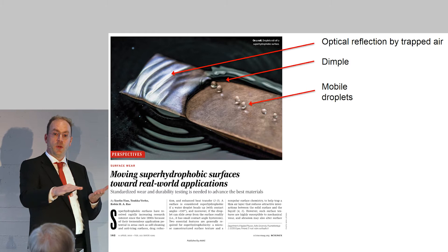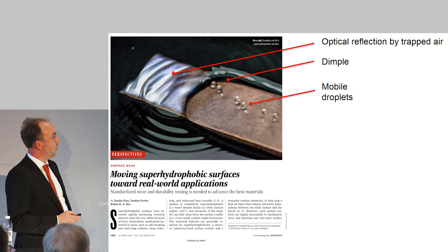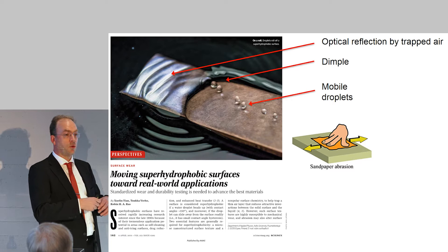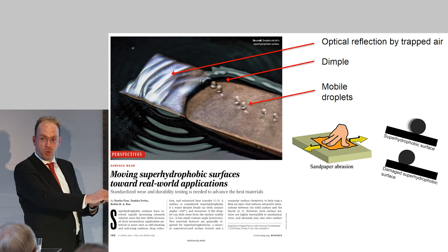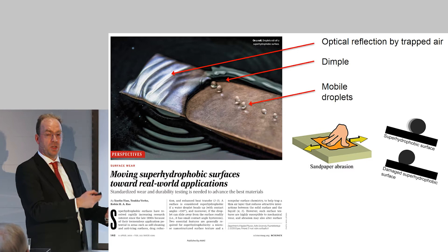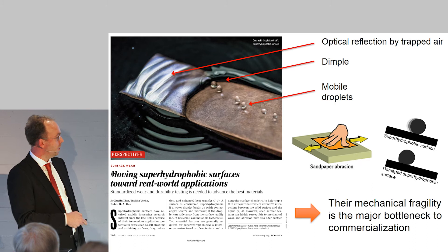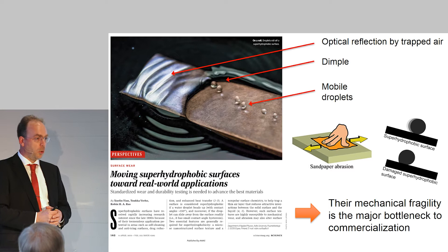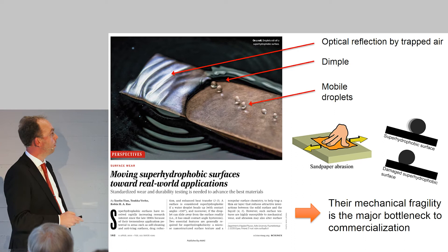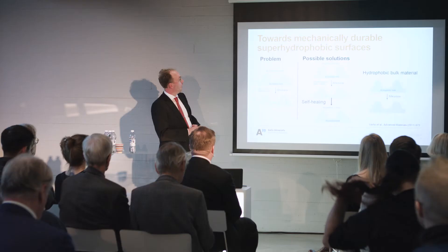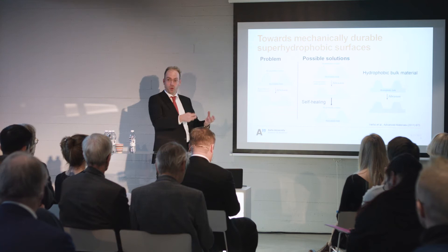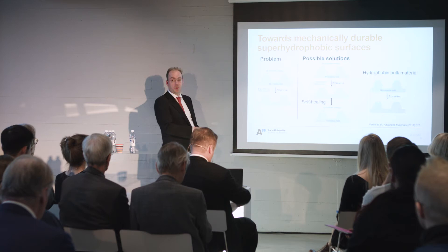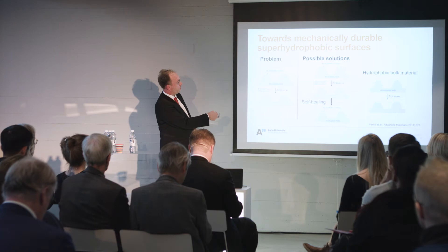One of the major problems of superhydrophobic surfaces is that they do not last long. If you touch them or use sandpaper, they get damaged. Normally droplets roll off easily, but when damaged, the droplet can still have a high contact angle yet becomes pinned to the surface and stays stuck. This is the bottleneck to commercialization — these surfaces are mechanically very fragile.